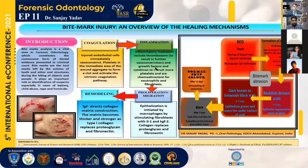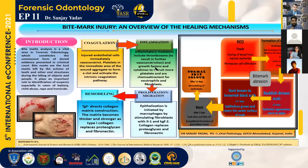The process of wound healing starts from coagulation. The injured epithelium immediately causes vasoconstriction. Platelets in the immediate area of the wound aggregate to form a clot and activate the intrinsic coagulation pathway. Inflammatory mediators include thromboxane, which causes further vasoconstriction, along with growth factors and cytokines to recruit more platelets, and the area becomes chemotactic for neutrophils and fibroblasts.